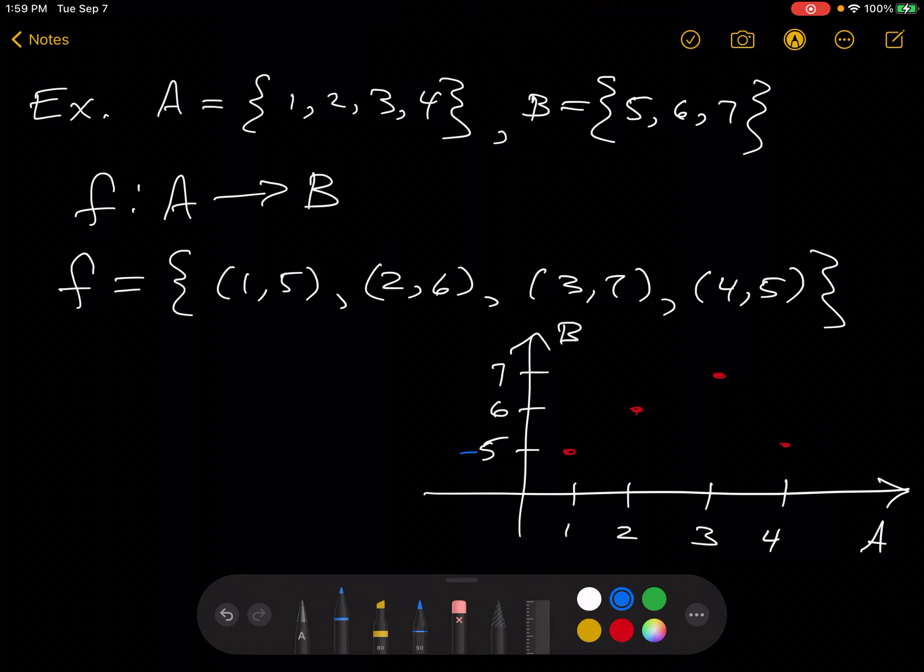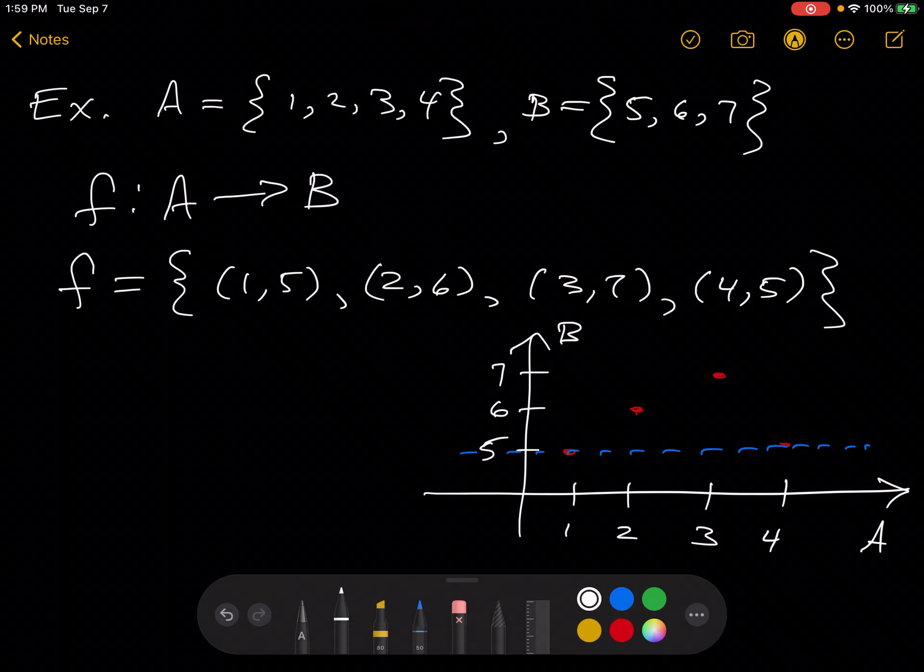And you can see that it does not pass the horizontal line test. f is not one-to-one.